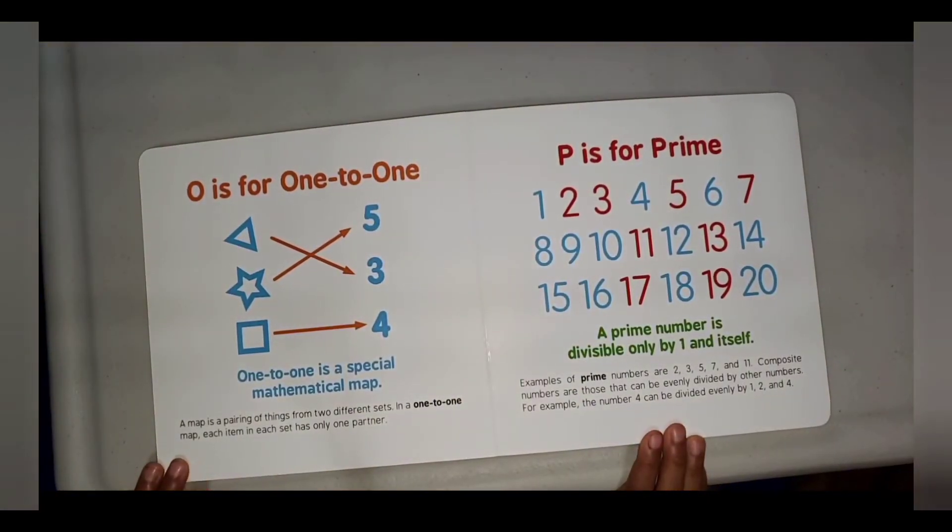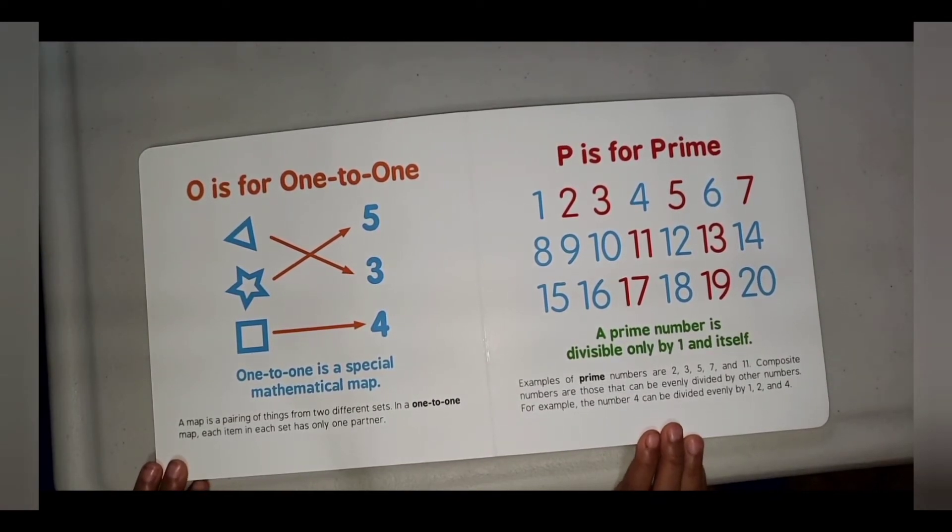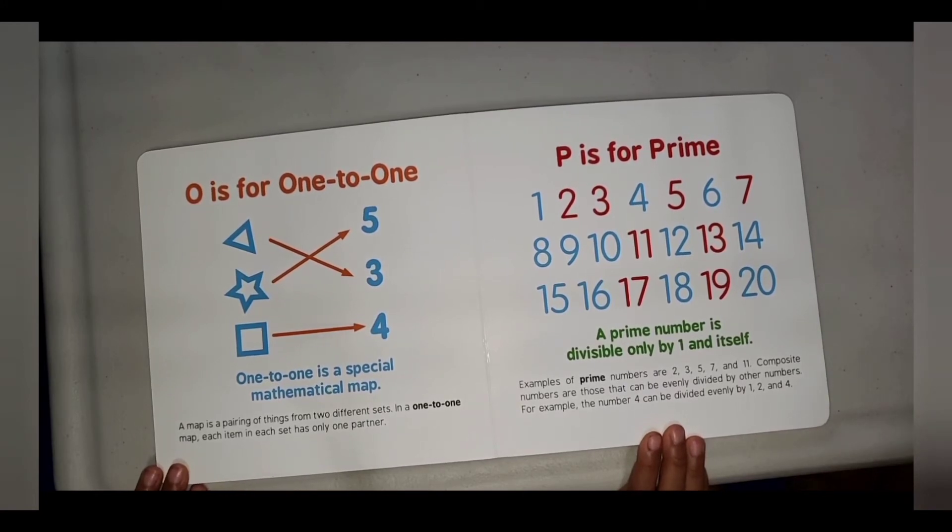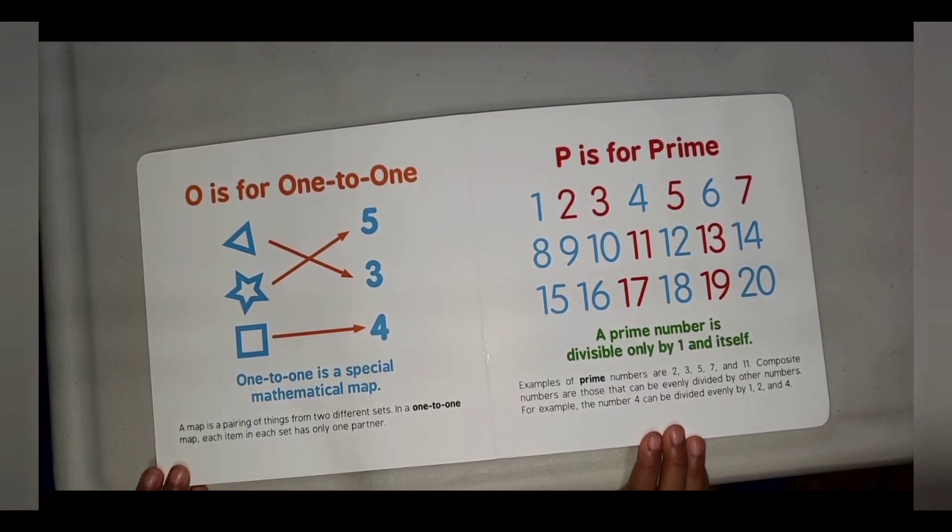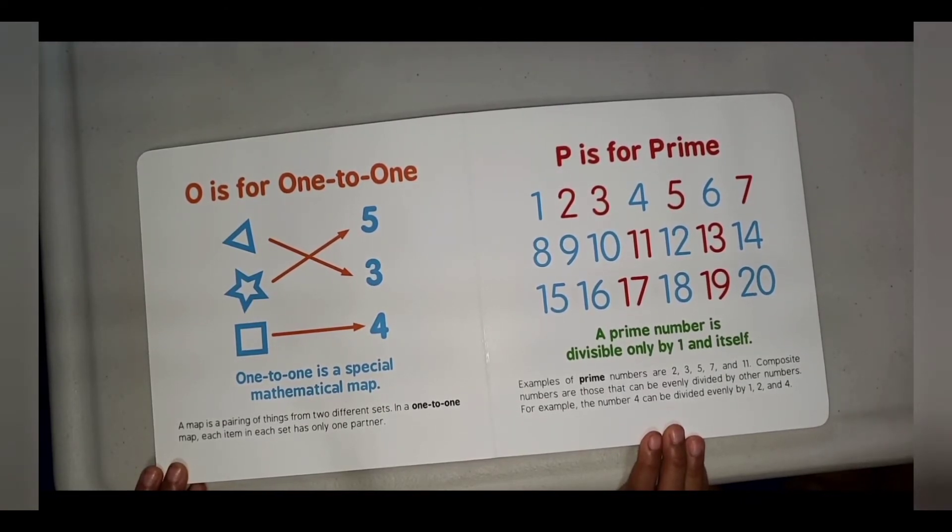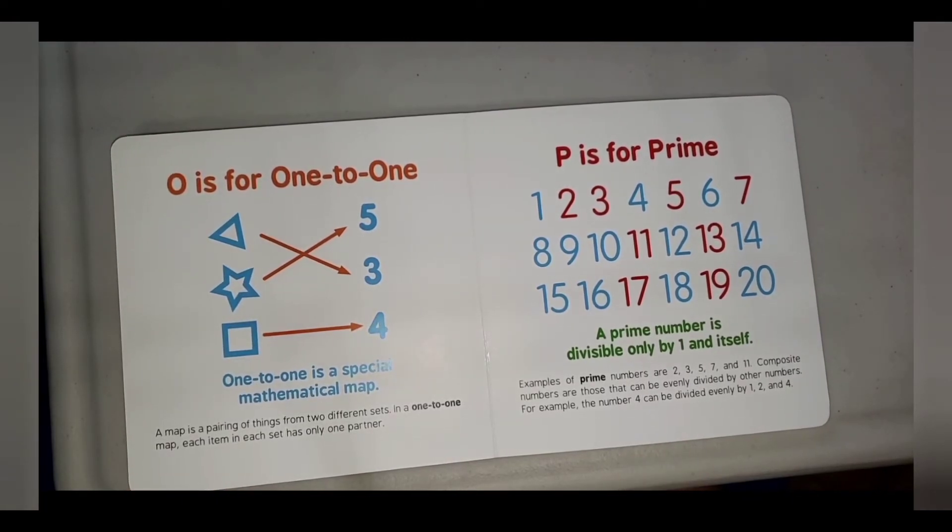O is for One-to-one. One-to-one is a special mathematical map. A map is a pairing of things from two different sets. In a one-to-one map, each item in the set has only one partner.